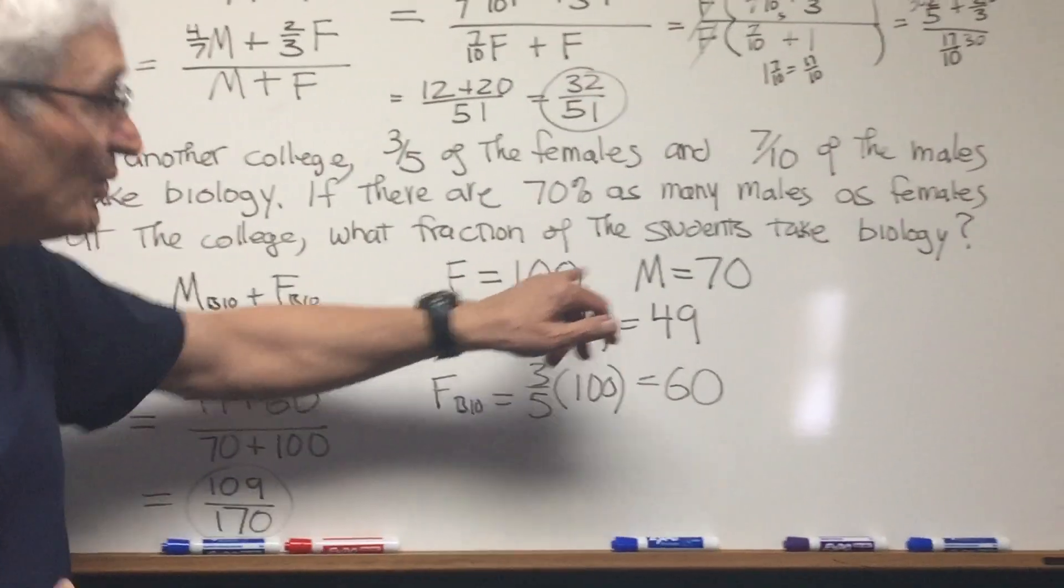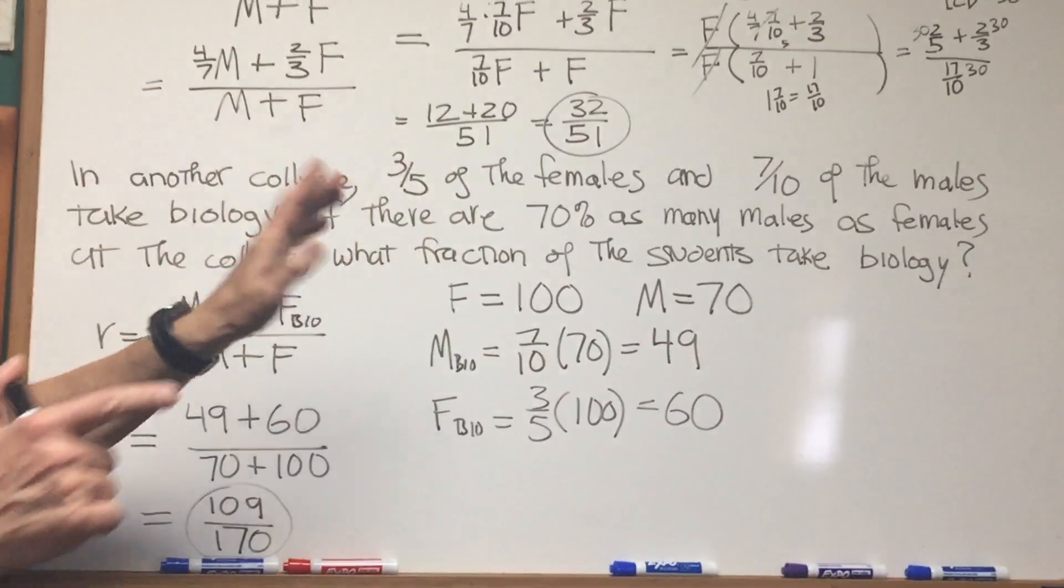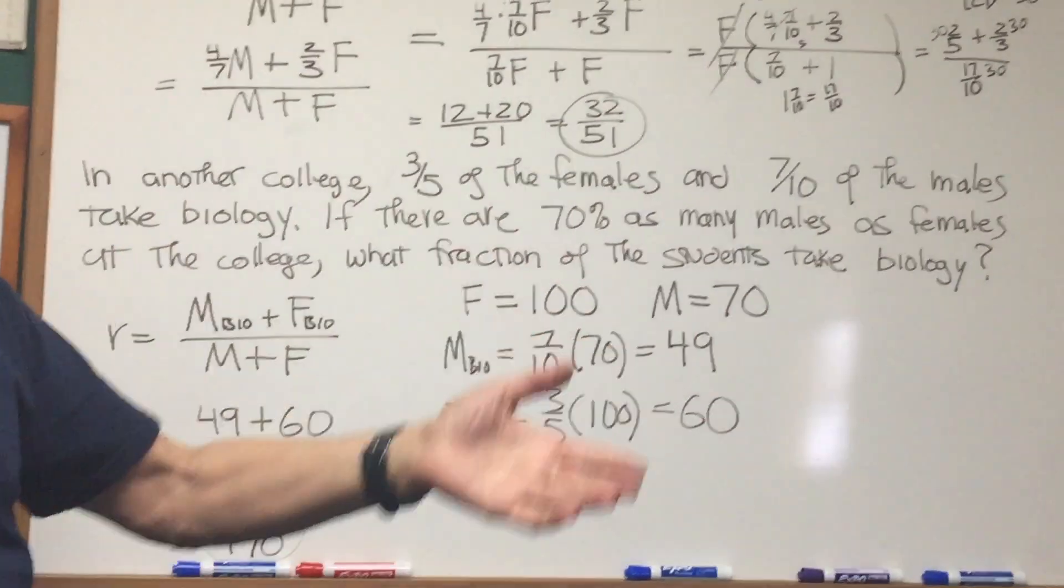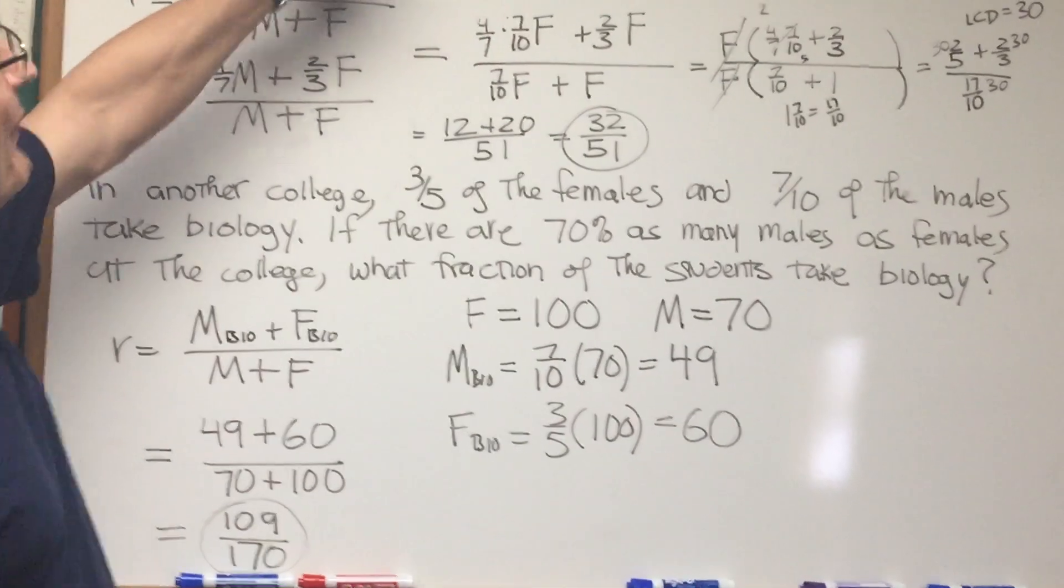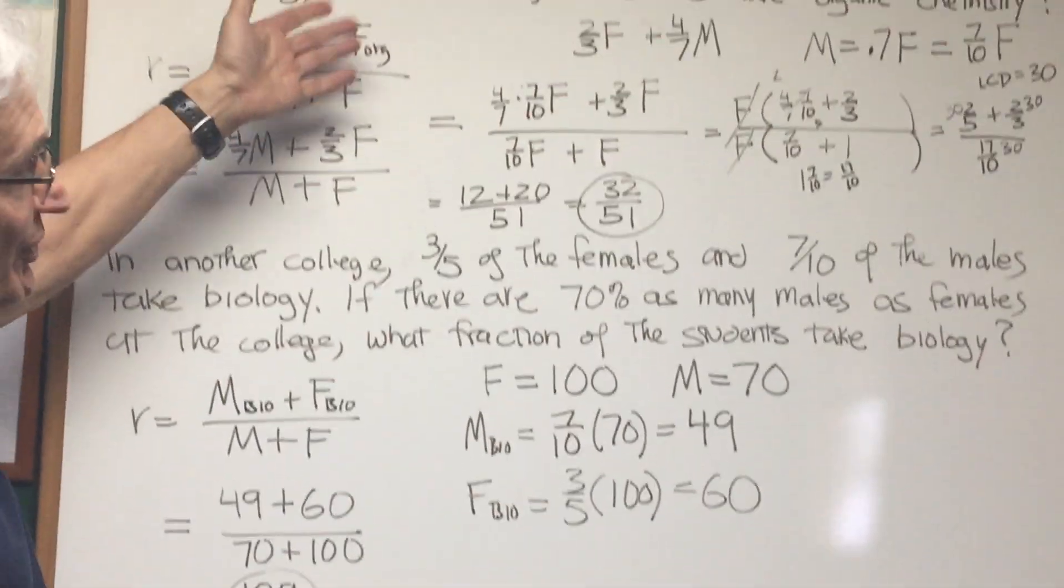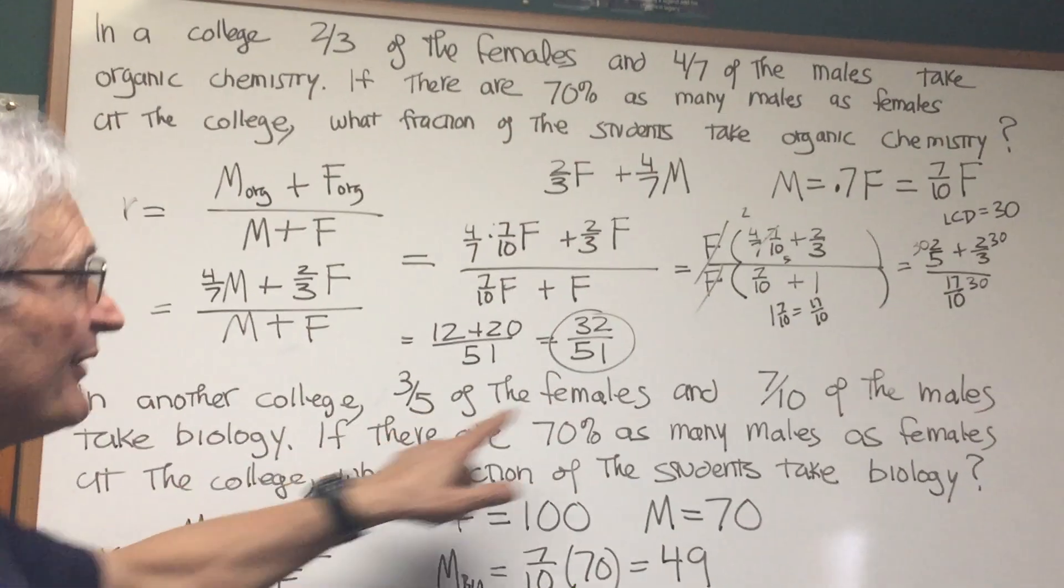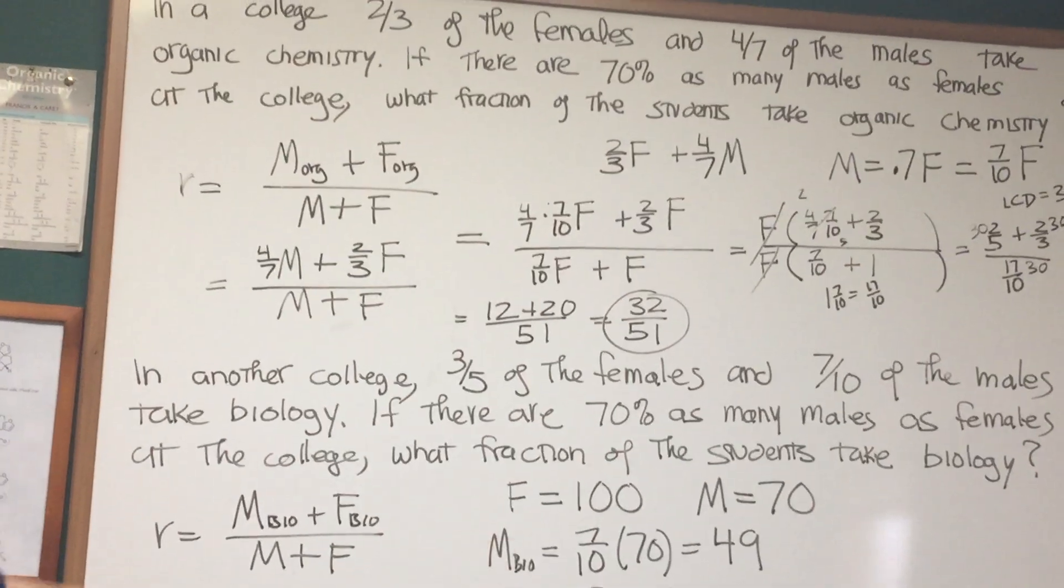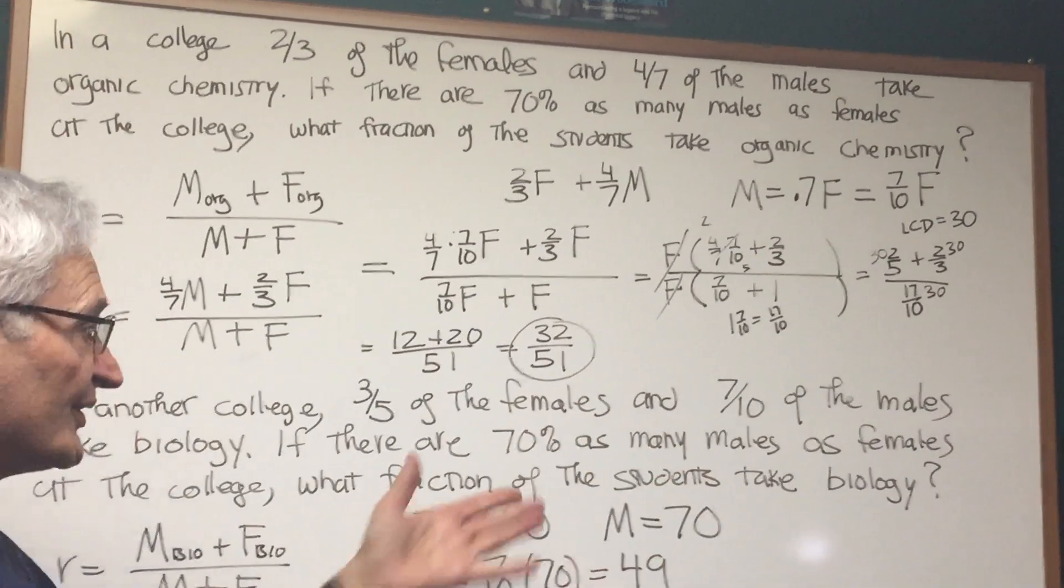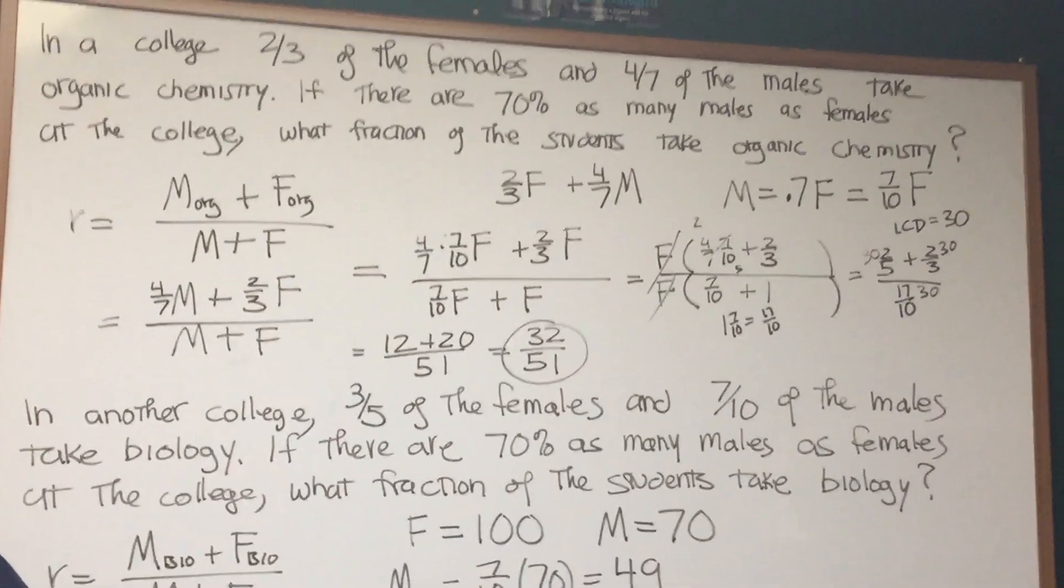You may ask, why didn't we adopt this approach for the previous problem? I adopted this approach in this problem because the denominator is five and ten divided into a hundred evenly. With the previous problem, the three and the seven did not, so I had to resort to all the fraction detail that I did. But if you have the opportunity of making up your own numbers and making sure that the numbers are nice and evenly divisible into a hundred, then this approach is one that's available to you as well.